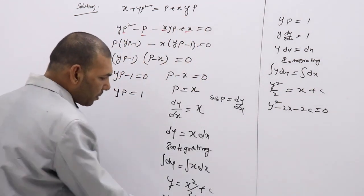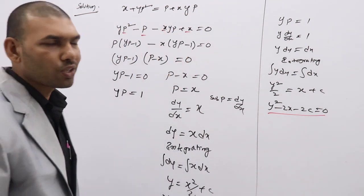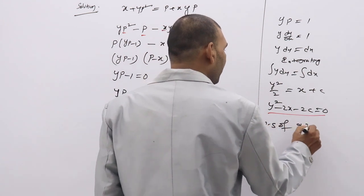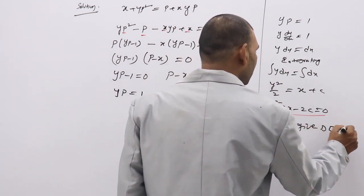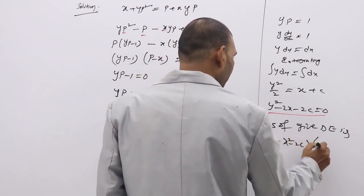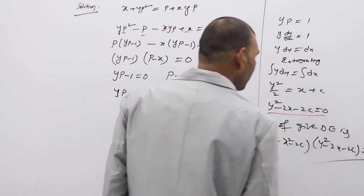Now, if you multiply these two solutions, you will get the general solution of given differential equation. The general solution of given differential equation is 2y minus x squared minus 2c into y squared minus 2x minus 2c equal to 0.